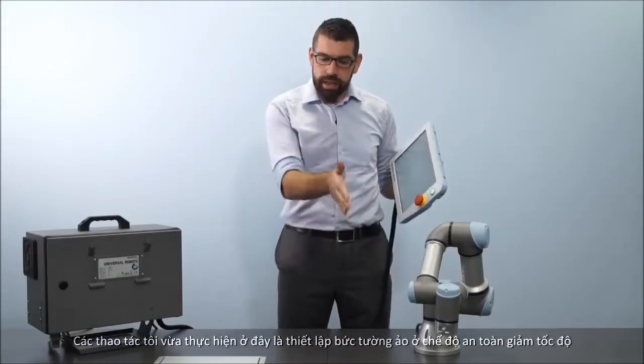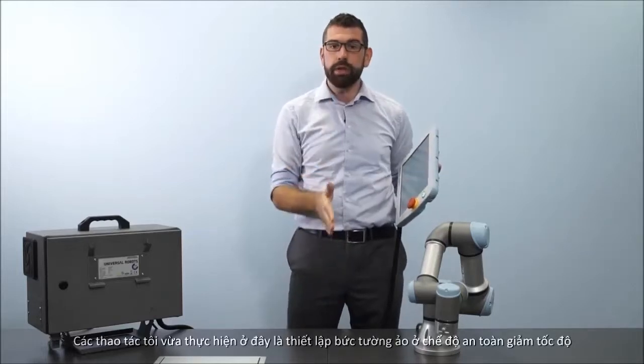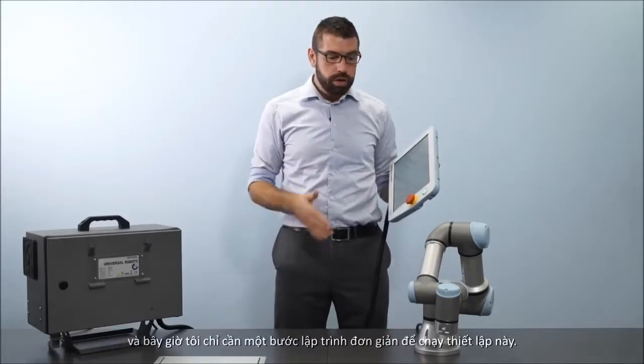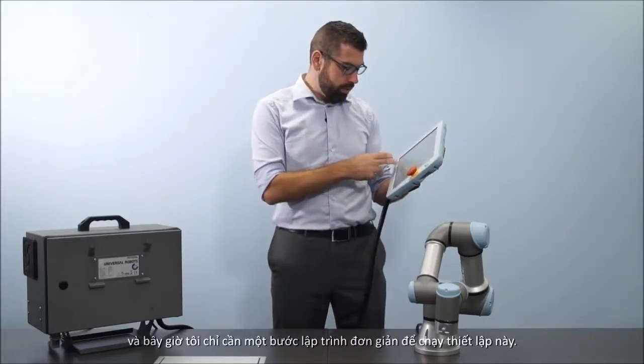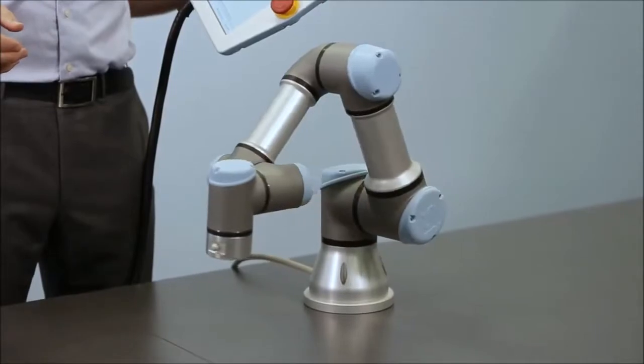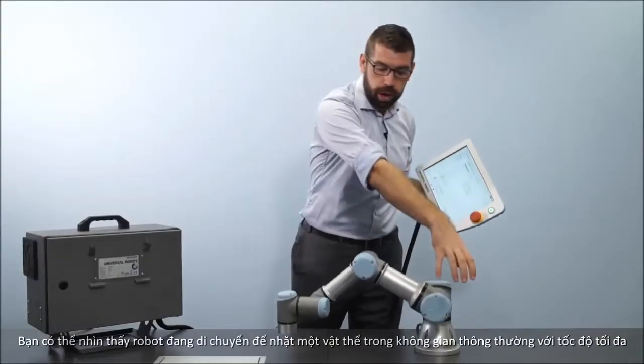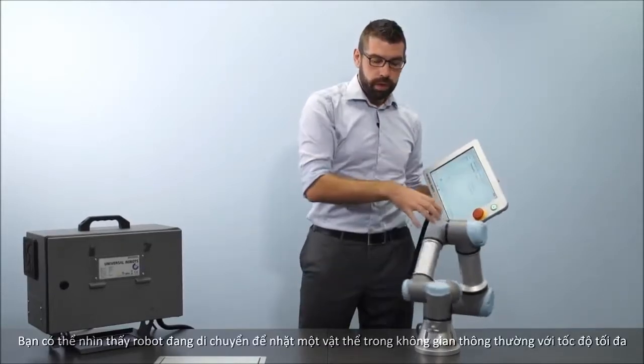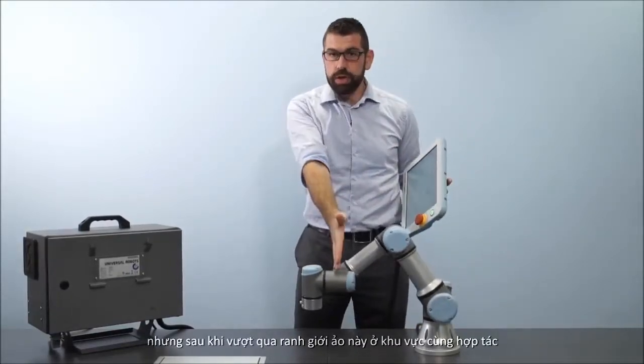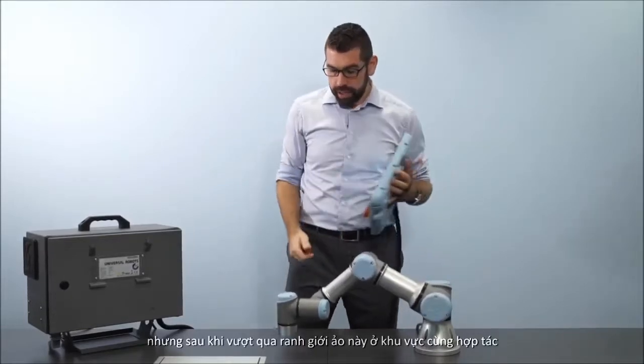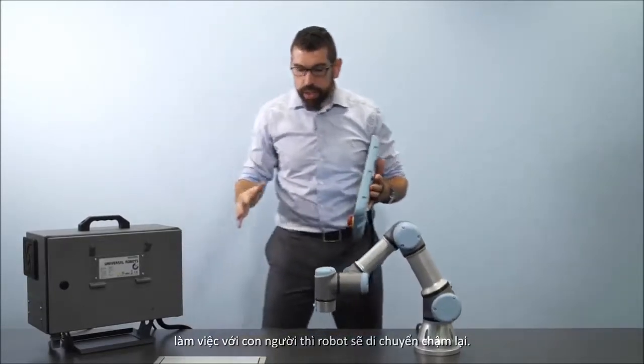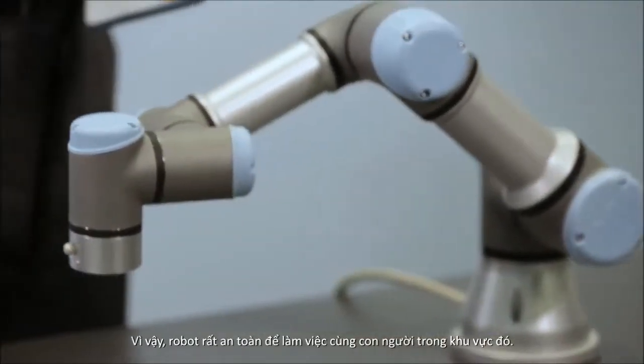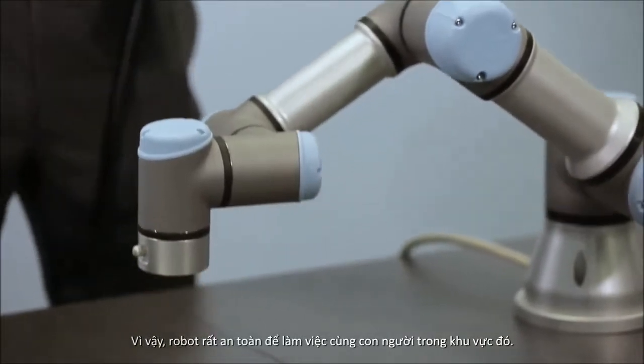What I've actually done now is taken that plane that I had previously used as a hard limit and configured it to trigger reduced mode. I've made a small program to demonstrate this. What we can see now is when the robot comes to pick up an object in the normal zone, it runs at full speed. But as soon as it crosses over this boundary into the collaborative zone where the human will be working, it slows down so it is safe for the robot to work alongside the human in that area.